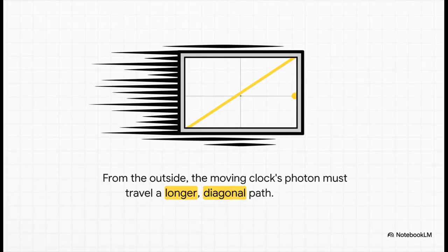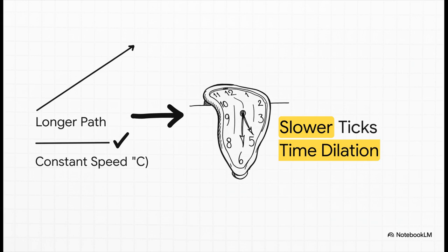But now, let's watch that same clock as it flies past us at, say, half the speed of light. From our point of view, the mirrors are moving forward. So for that little photon to get from the bottom mirror to the top one, it doesn't just go up. It has to travel along a longer, diagonal path to catch up. And here's the punchline. We already established that the speed of light is the same for everyone. It never changes. So, if our photon now has to travel a longer distance, but it can't go any faster, well then, it simply must take more time to make the trip. From our perspective, we are literally watching the moving clock tick slower than our own. This isn't an illusion. Time itself is slowing down for that clock. That's time dilation.